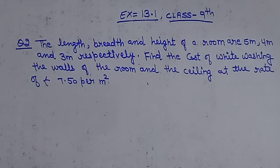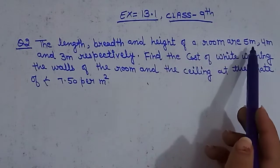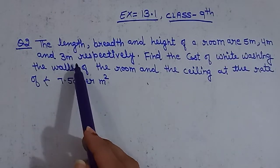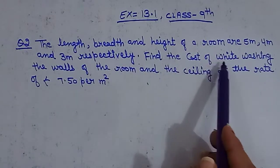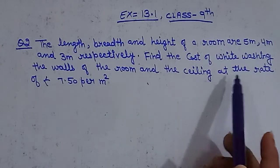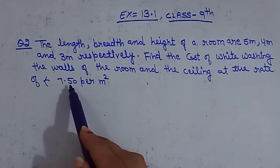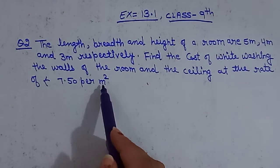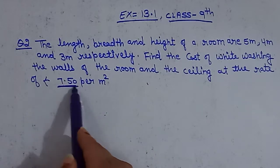Hello students, I hope you are all doing well. Today I am going to discuss with you Question Number 2 from Exercise 13.1, Class 9th. The question says: The length, breadth, and height of a room are 5 meters, 4 meters, and 3 meters respectively. Find the cost of whitewashing the walls of the room and the ceiling at the rate of rupees 7.50 per meter square.